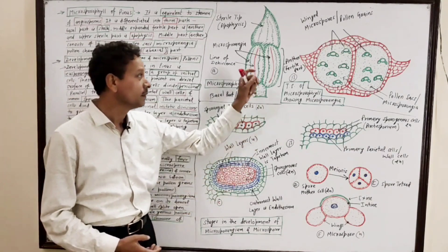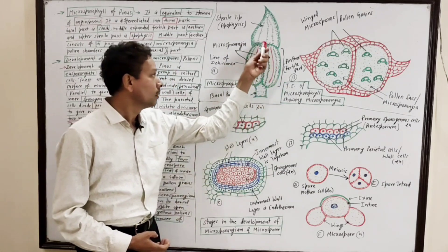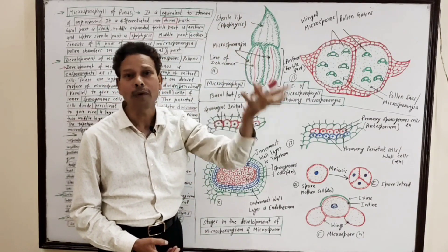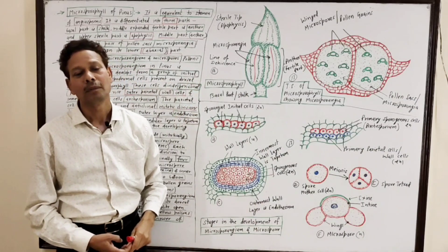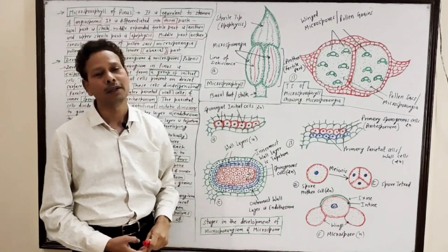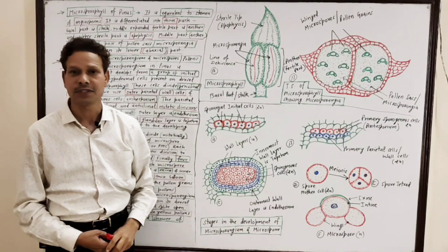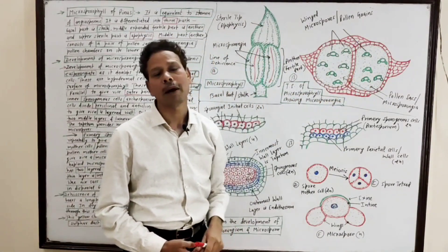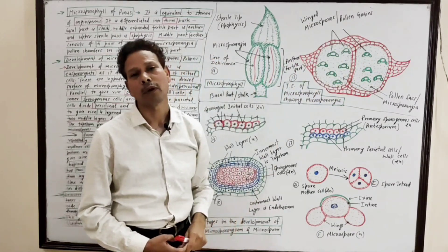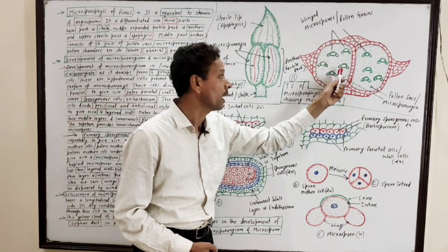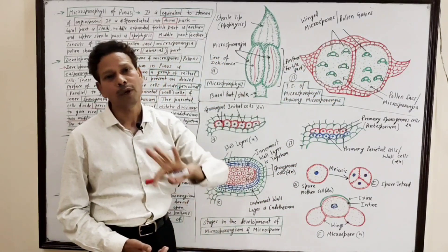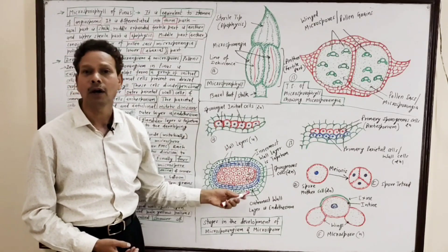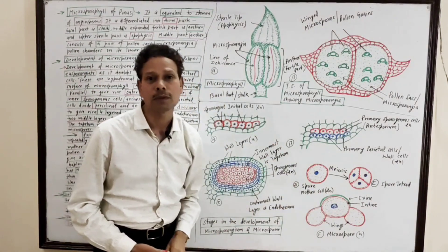The mature microsporangium at the time of dehiscence releases a pale yellowish cloud of pollens, commonly called a shower of sulfur dust. This covers all about the structure of microsporophyll — the transverse section showing two microsporangia, two pollen sacs, two pollen chambers, and each pollen chamber having pale yellowish winged pollens. This diagram shows different stages of development of microsporangium and development of microspores or pollen grains.